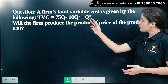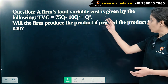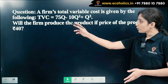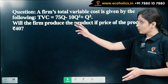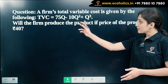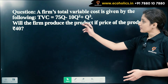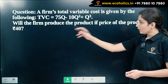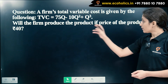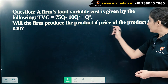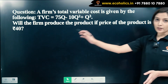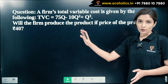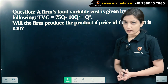A firm's total variable cost is given by the following: total variable cost is given as 75Q minus 10Q squared plus Q cubed. Will the firm produce the product if the price of the product is Rs 40? Before solving this question, let us understand a few basic concepts.